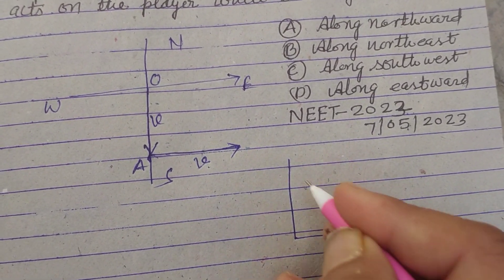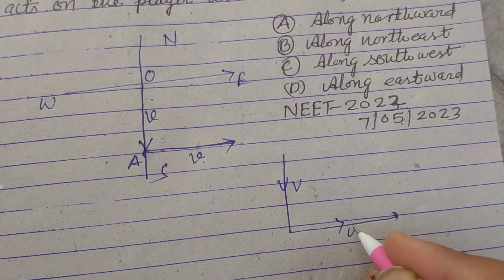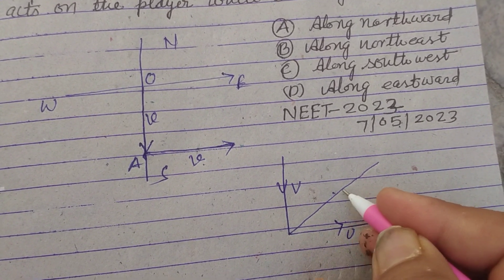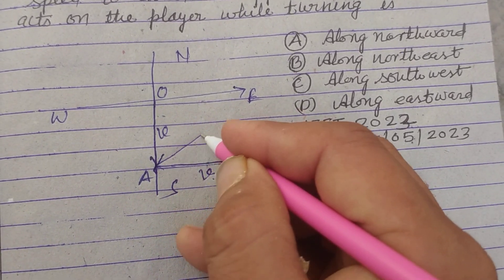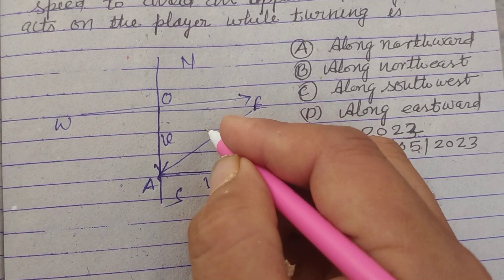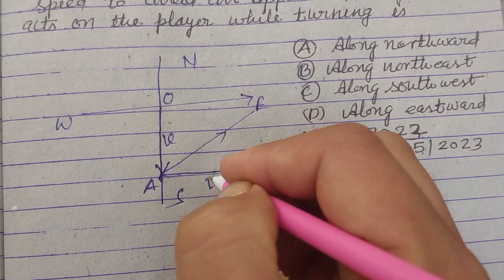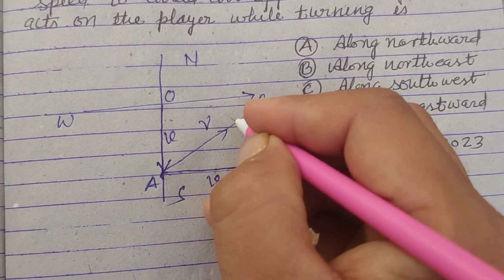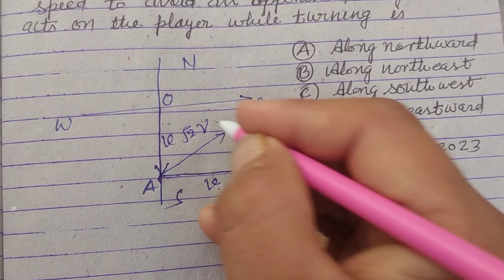We have two velocity vectors. Their resultant is given by this vector. So this is V, V, and the resultant is root 2 V.